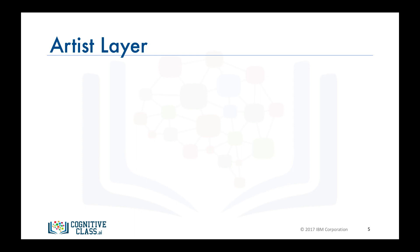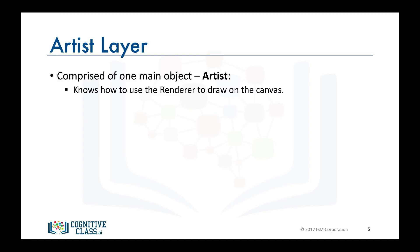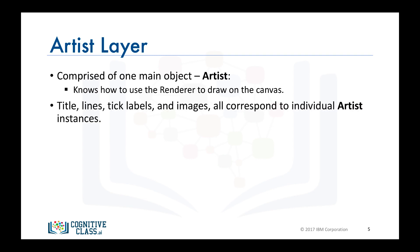Moving on to the artist layer, it is composed of one main object, which is the artist. The artist is the object that knows how to take the renderer and use it to put ink on the canvas. Everything you see in a Matplotlib figure is an artist instance — the title, the lines, the tick labels, the images, and so on — all correspond to an individual artist.